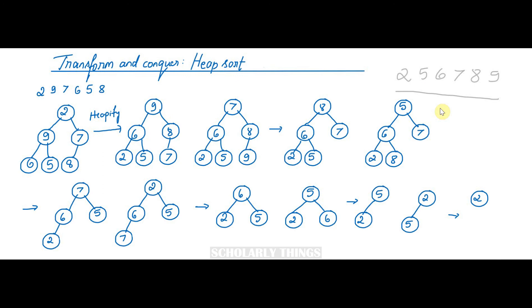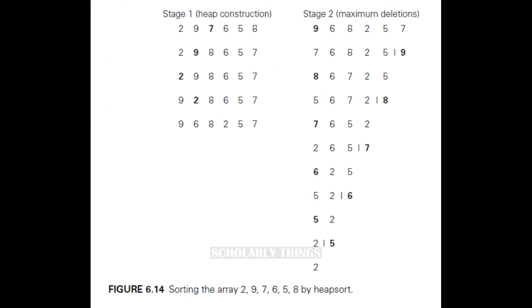This was tree representation. You can see the same example here in array representation. First stage is the heap construction, and the second stage is maximum deletion. Finally we get the sorted array.